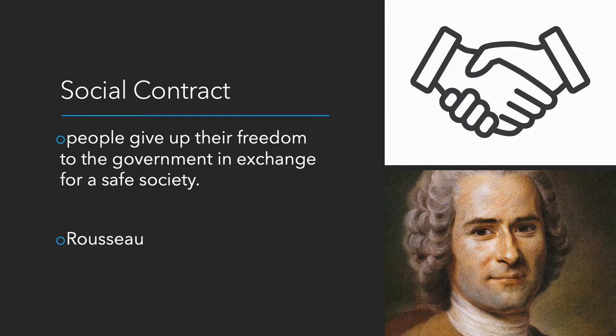Rousseau adds a twist to the social contract: if the government takes away too many freedoms and starts abusing them, then the contract is null and void and we can start rebelling against them. For the American Revolution, this is exactly what was argued — the English government was so abusive in taking away rights that the contract became null and void, and they needed to make a different contract with a different government. Therefore it's philosophically valid to rebel against the English king.